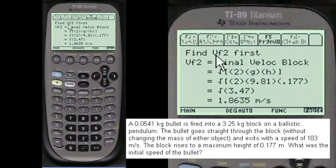We need to find the final velocity of the block first, which is 1.8635. You do this formula here, square root of 2gh. Enter the variables. Here it is.